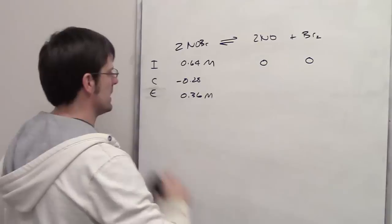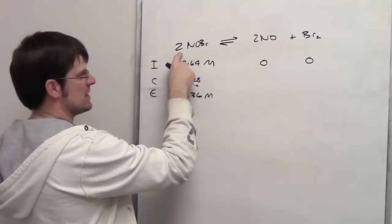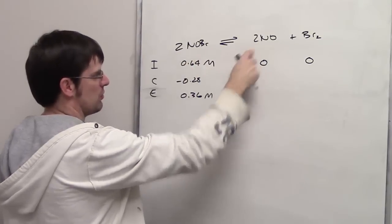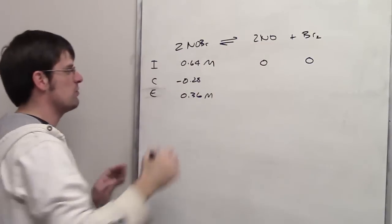I'm now going to use the stoichiometry of this reaction in order to fill in these blanks. You'll notice that this has a 2 in front of it. This has a 2 in front of it, which means that the change in concentration is going to be the same for these guys because they have the same coefficient in front of them.